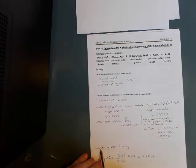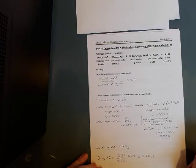So from the previous page, the actual yield, what we extracted was 2.37 grams. Percentage yield will be 2.37 divided by 2.83 times 100 gives us 83.6 percent. So moving on.